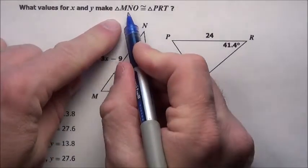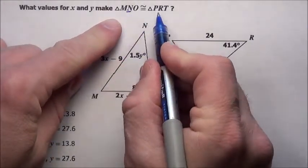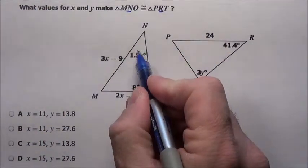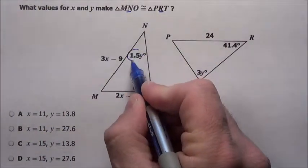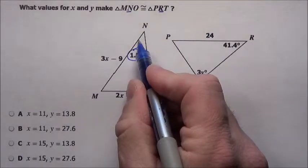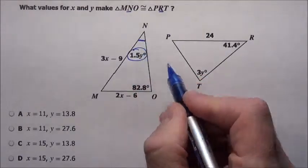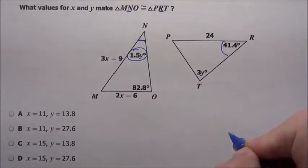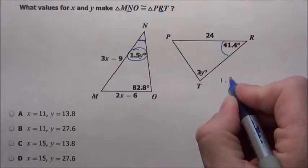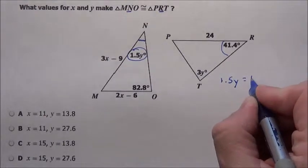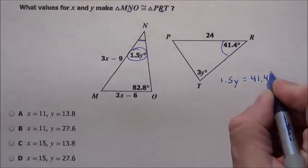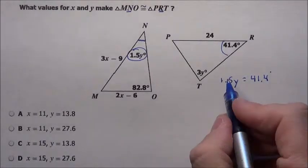It doesn't give me anything there. N has to be exactly the same angle as R. Here's N, which has 1.5y times y. That's where that corner right there is. That has to match this 41.4. So I know 1.5 times y has to equal that 41.4 degrees.